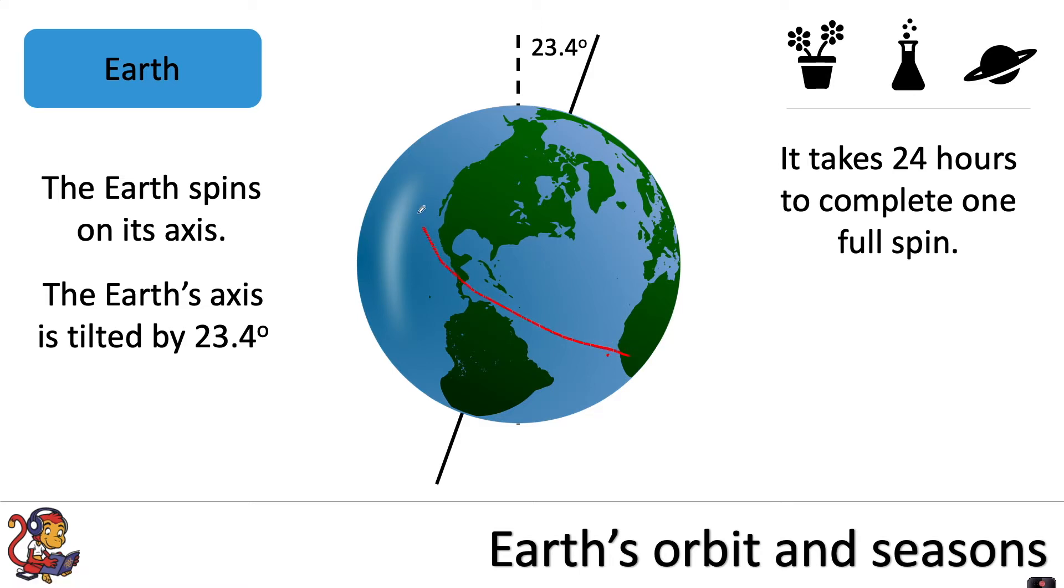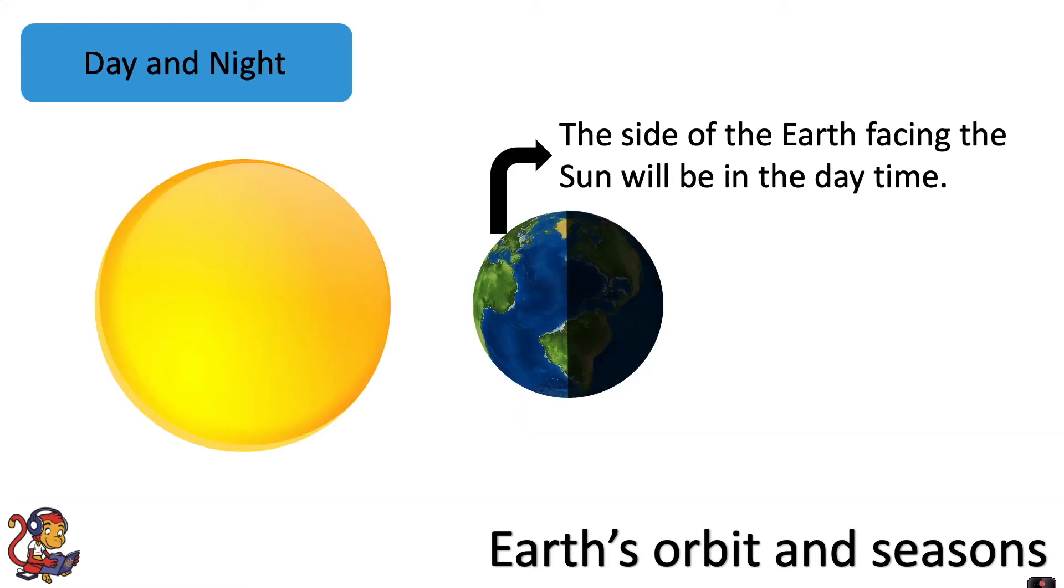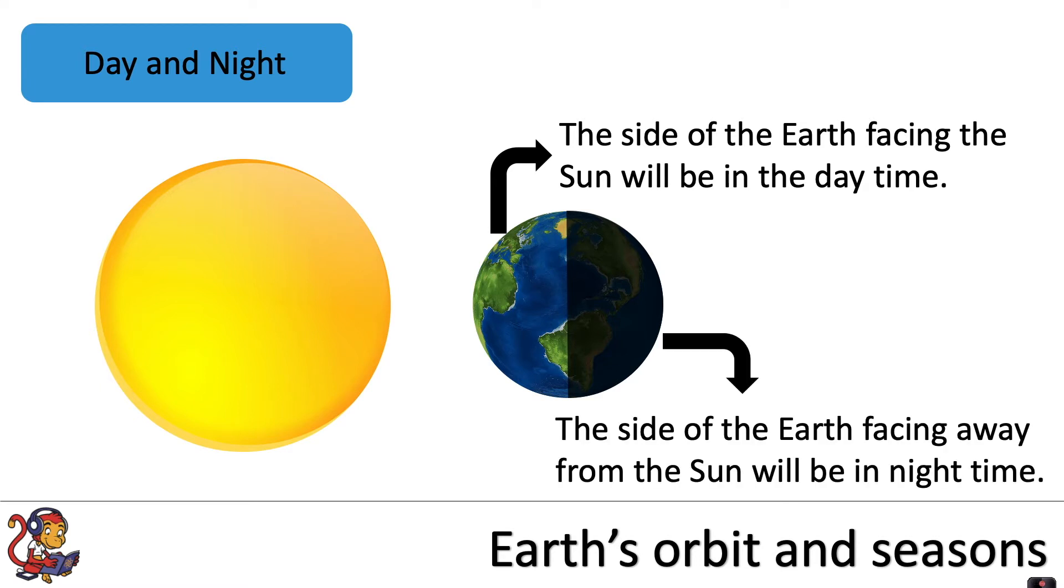The earth will be spinning around on its axis and this is why there is day and night on earth. The side of the earth facing the Sun will be in the daytime, and the side of the earth facing away from the Sun will be in the night time.